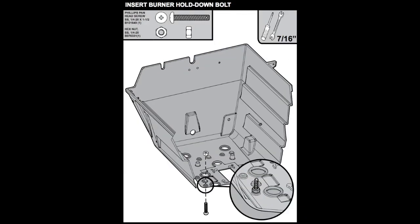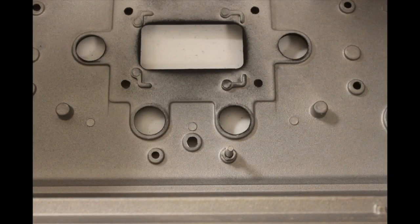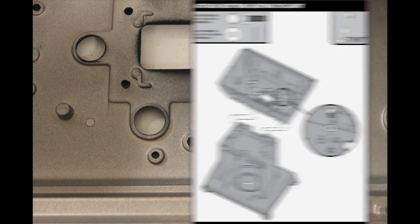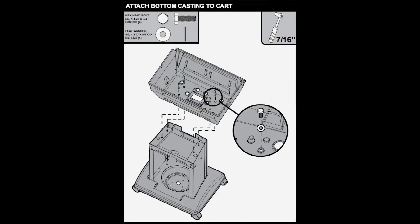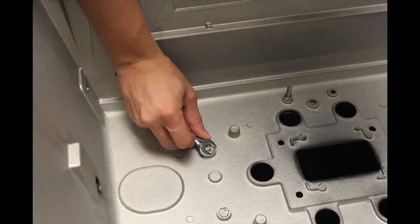Insert the burner hold down screw through the bottom of the grill casting and secure it with the nut. Use four bolts to attach the bottom casting to the cart. If you're installing a post, you'll use the inside bolt pattern.